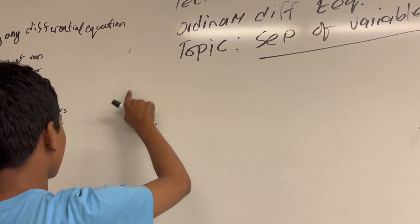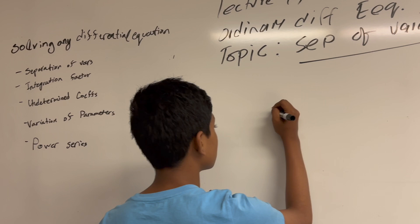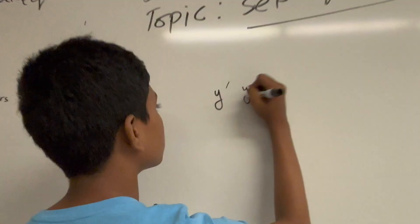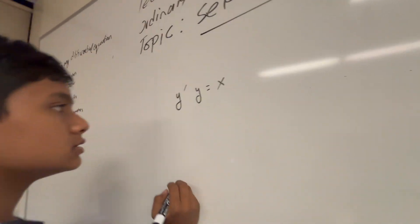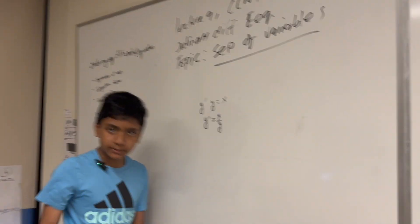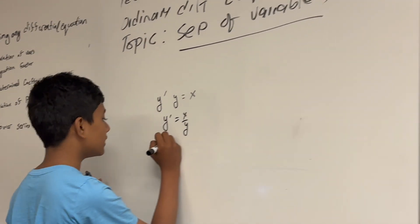So what is that? Well, if we have a very basic differential equation, let's say we have y prime times y equals x. In other words, y prime equals x divided by y. This is one of the simplest differential equations you can get.